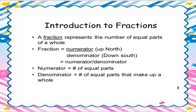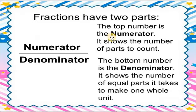By example we will understand. A fraction has two parts: numerator and denominator. The numerator comes first. Numerator means the upside digit and denominator means the downside digit. The top number is the numerator — it shows the number of parts to count.